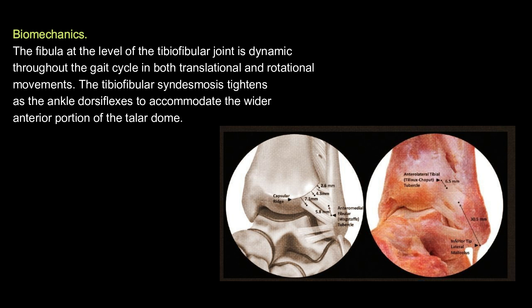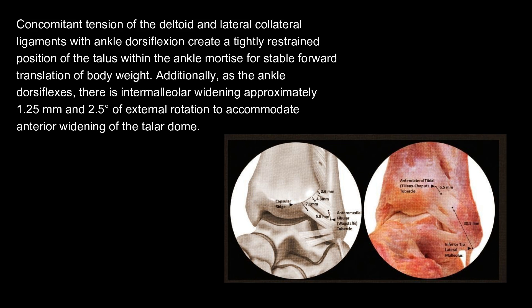Biomechanics: The fibula at the level of the tibiofibular joint is dynamic throughout the gait cycle in both translational and rotational movements. The tibiofibular syndesmosis tightens as the ankle dorsiflexes to accommodate the wider anterior portion of the talar dome. Concomitant tension of the deltoid and lateral collateral ligaments with ankle dorsiflexion creates a tightly restrained position of the talus within the ankle mortise for stable forward translation of body weight. Additionally, as the ankle dorsiflexes, there is intermalleolar widening of approximately 1.25 millimeters and 2.5 degrees of external rotation to accommodate anterior widening of the talar dome.